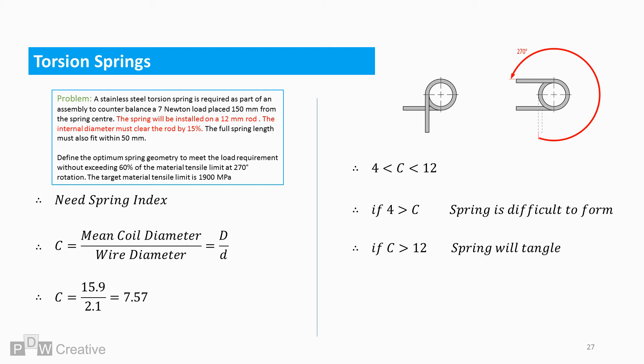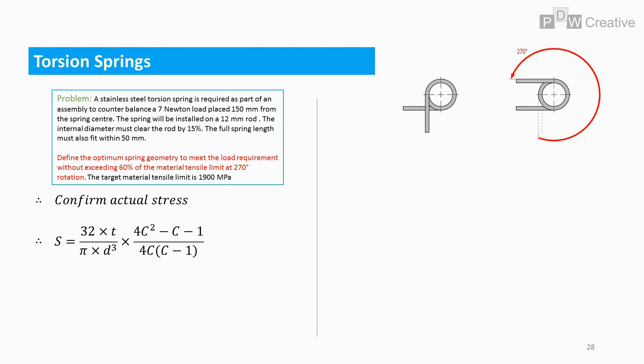Let's now find our actual stress including Wahl correction. Remember, our target stress is 60%. Let's add the missing pieces to the stress equation. So now with correction we have a stress of 1280.87 MPa.